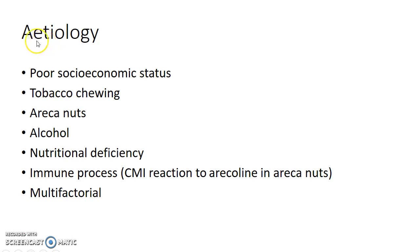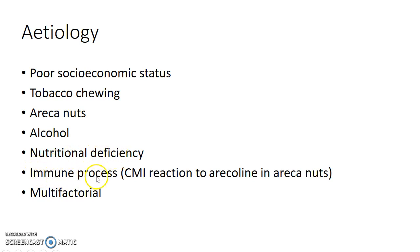Now let us hear about the etiology of this condition. The risk factors for OSF include poor socioeconomic status, tobacco chewing, areca nuts, alcohol, and nutritional deficiency like vitamin deficiency. The disease is thought to be an immune process — a cell-mediated immune reaction to arecoline seen in areca nuts. The disease is thought to be multifactorial.